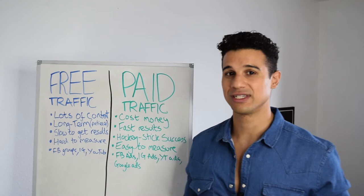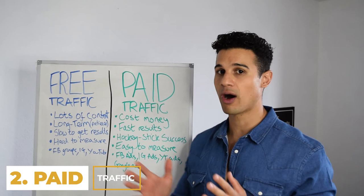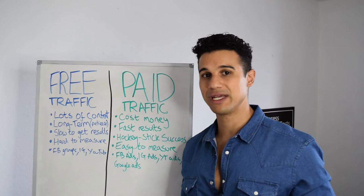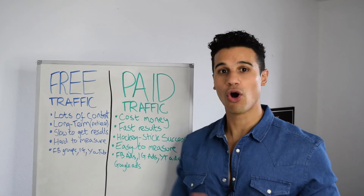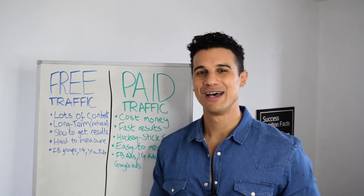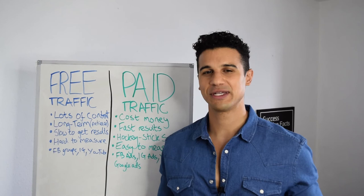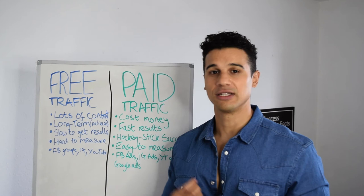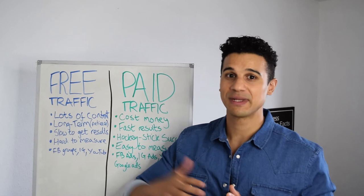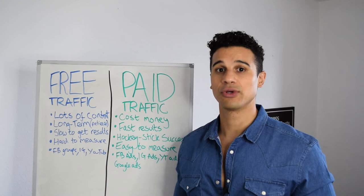The second strategy to get clients from social media is using paid traffic. This means paying the platforms to bring you interested prospects, leads, and eventually clients. There is a cost involved. A lot of people say it costs thousands of pounds and you'll go bankrupt, but it really depends on what you put in. You can spend as little as one pound a day or $1 a day, or as much as $10,000 a day. What really matters is how you're running these ads.